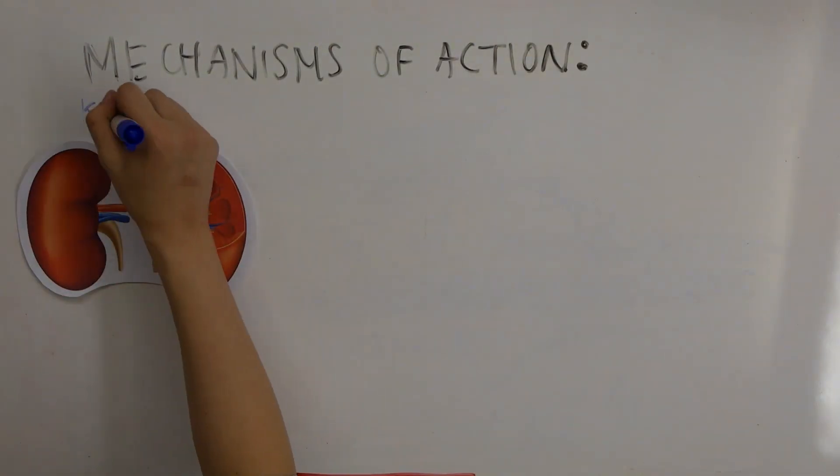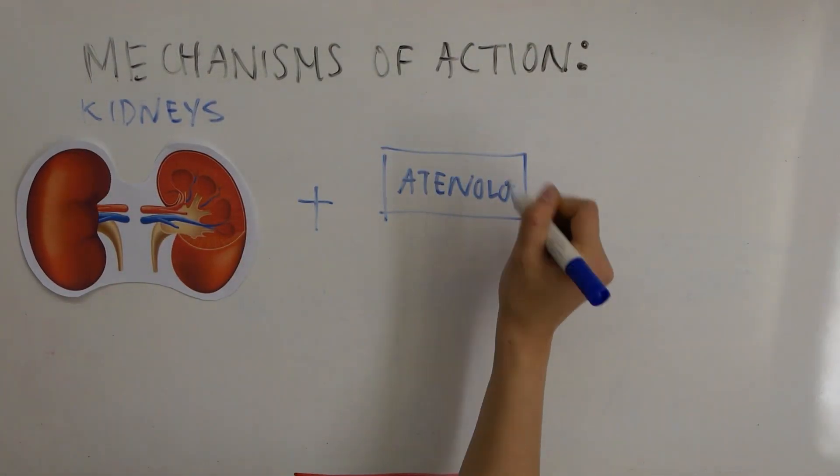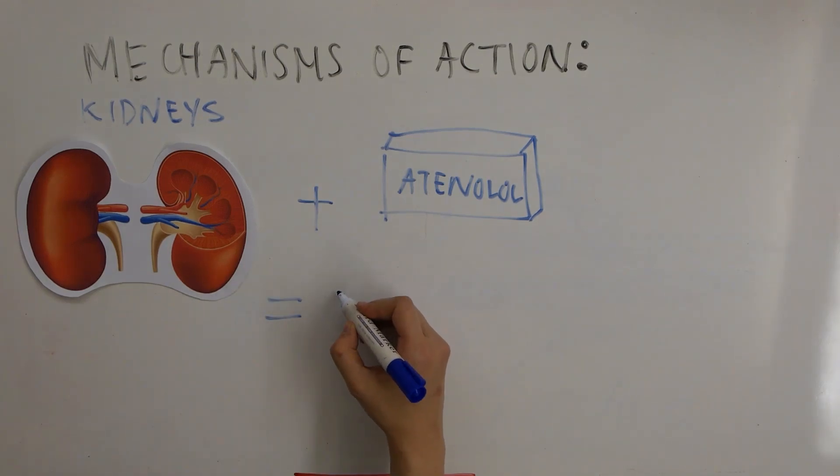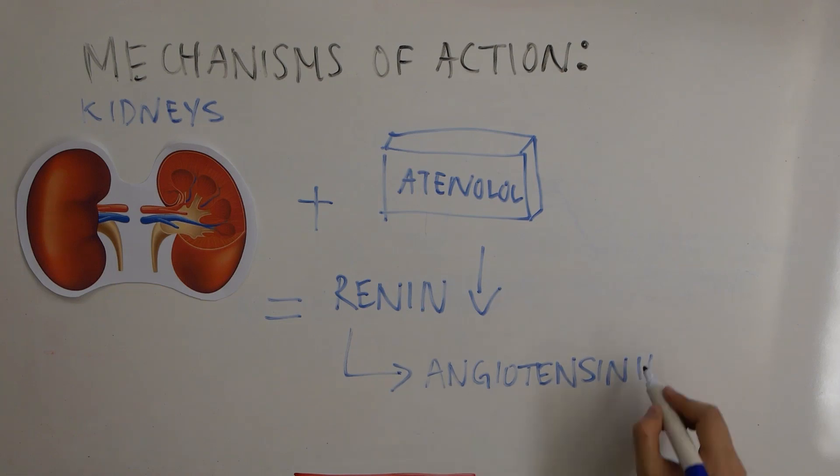Cardioselective beta blockers inhibit beta 1 adrenoceptors, preventing the release of renin from the kidneys. A decrease in circulating plasma renin triggers a reduction in angiotensin 2 and aldosterone. A decrease in that balance results in an enhancement of renal sodium and water loss,